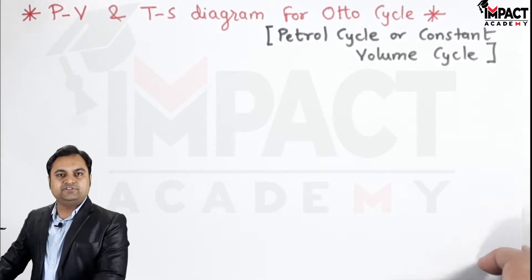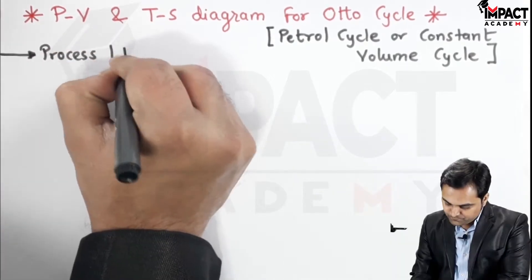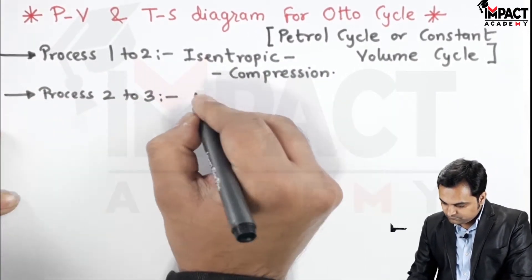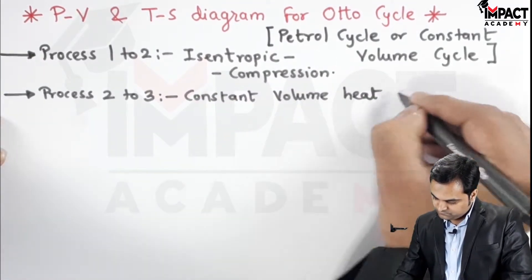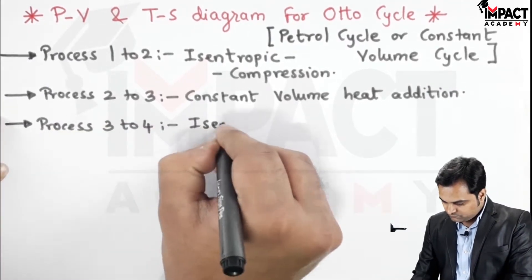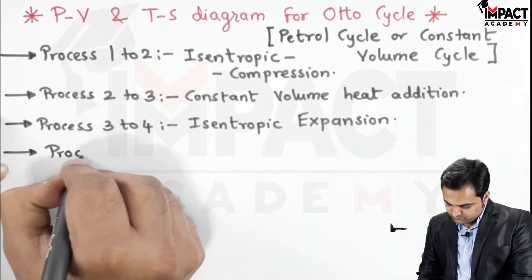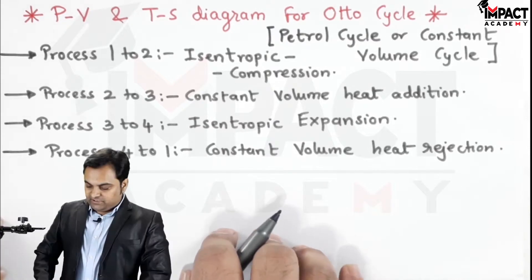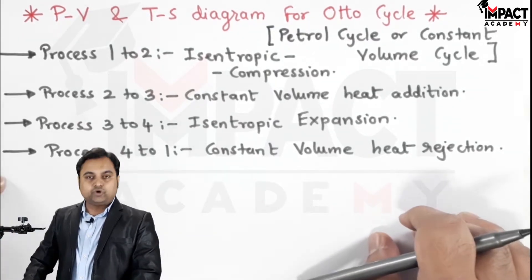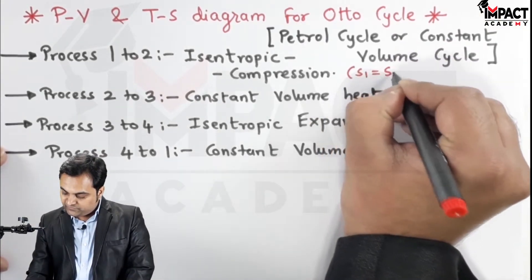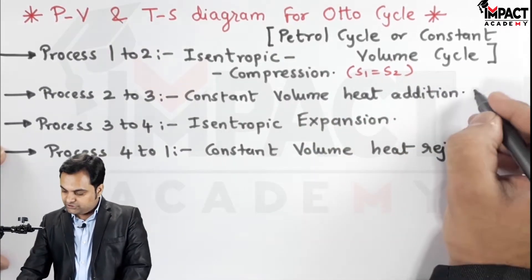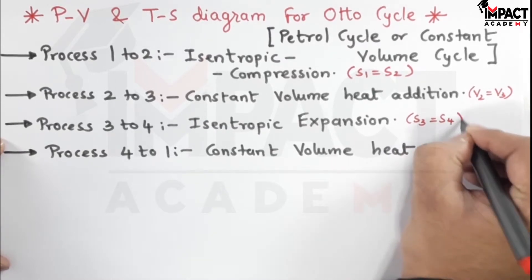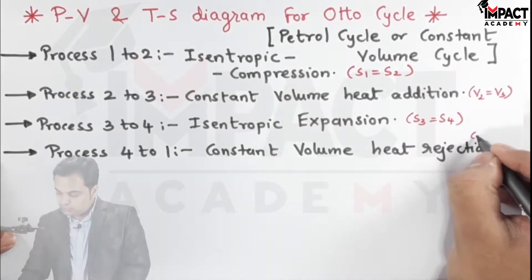Now I will mention the processes used in the Otto Cycle. The first one is isentropic compression — isentropic means entropy remains constant, denoted by S, so S1 is equal to S2. Then it is constant volume heat addition, so V2 is equal to V3. Process 3 to 4 is isentropic expansion, so S3 is equal to S4. Finally, 4 to 1 is constant volume heat rejection, so V4 is equal to V1.